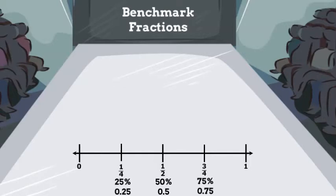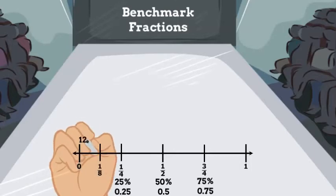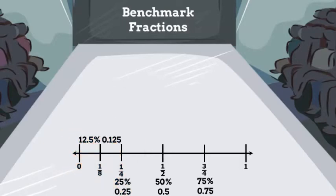If you cut a fourth in half, you get an eighth. Imagine cutting a quarter in half. It would be equal to 12.5 cents, so one eighth is 12.5 percent or 0.125.